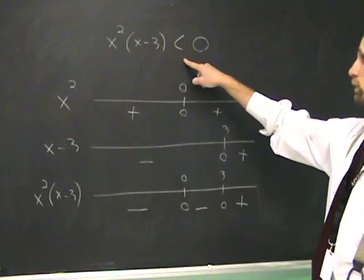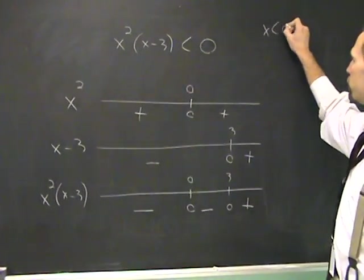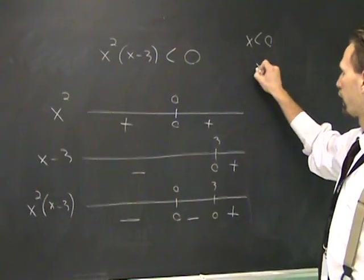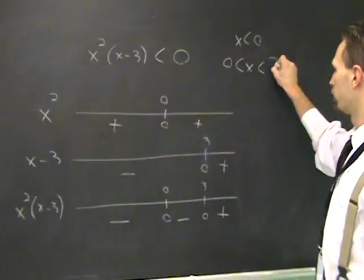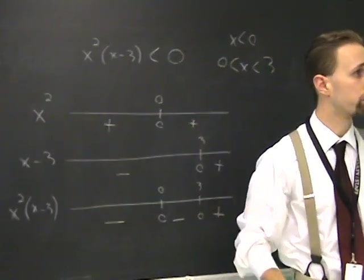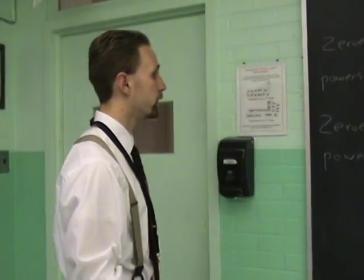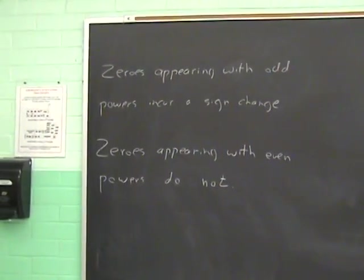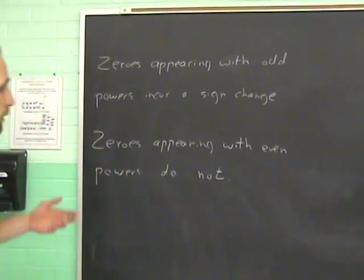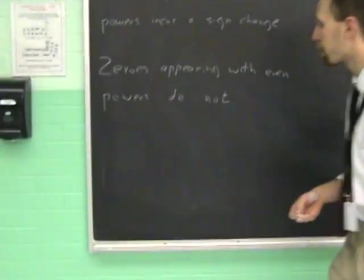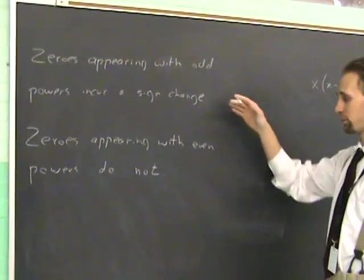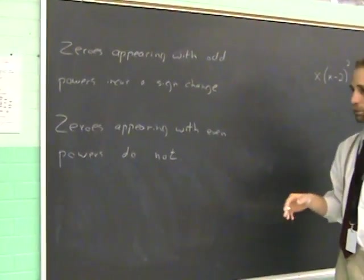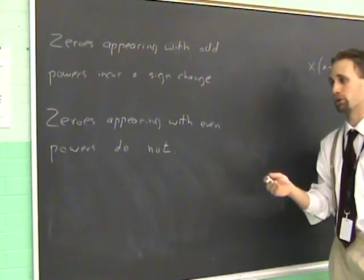So the solution to this would be x is less than 0 and x is between 0 and 3. Generally speaking, the rule is once you have the problem factored out and you want to solve the inequality, you look at the factors that appear an odd number of times. And zeros with an odd number of them that have an odd power attached to them, they will incur a sign change in your chart. And the ones that appear an even number of times, you won't get a sign change.